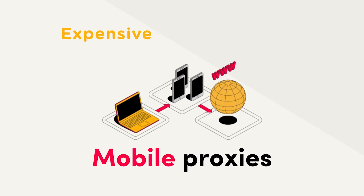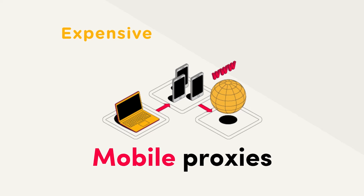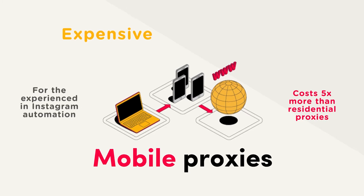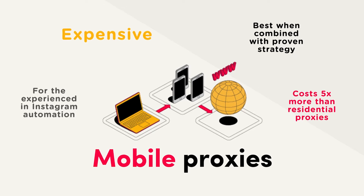For comparison, the same provider can sell residential proxies for $3 per gigabyte and mobile proxies for $15 per gigabyte — meaning mobile proxies can be five times more expensive. So we'd recommend searching for 4G proxies when you have a lot of experience with Instagram automation and a good strategy in place to grant you the biggest return on your investment.